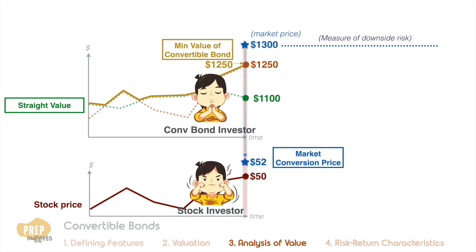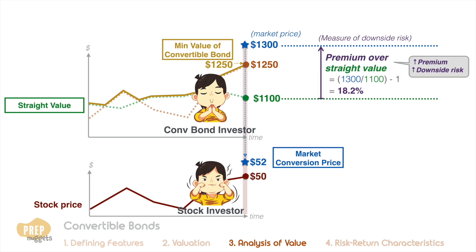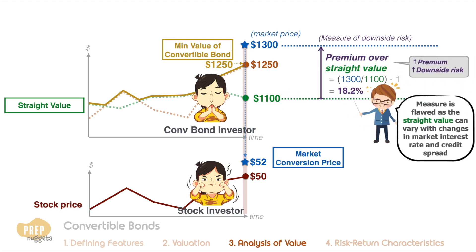One measure of the downside risk is the premium over straight value, calculated as the price premium of the convertible bond's market price over its straight value. In this case, the straight value was calculated at $1,100, giving a premium over straight value of 18.2%. The higher this premium, the higher is the downside risk of the bond. However, be aware that this measure is somewhat flawed, as the straight value of the bond can vary with changes in market interest rate and credit quality of the issuer.